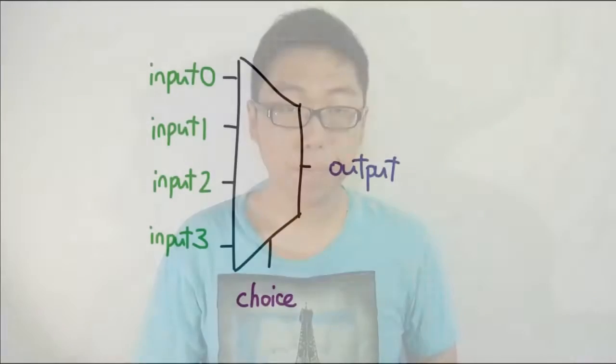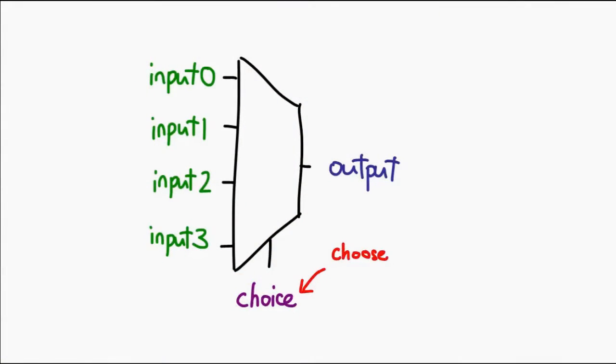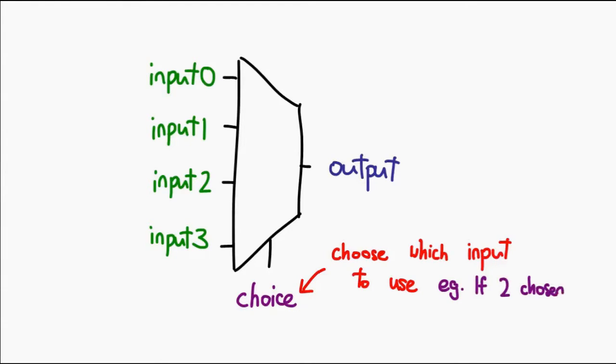So here's how a multiplexer works. You have a whole bunch of inputs. On top of that, you have an additional numerical input as well. Then of course you have a single output. The value reflected at the output is actually the value from the input chosen by the numerical input to the multiplexer.